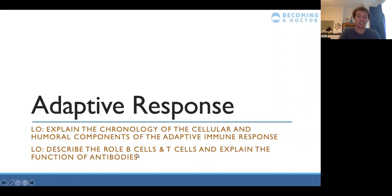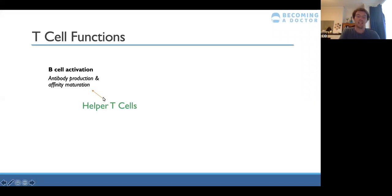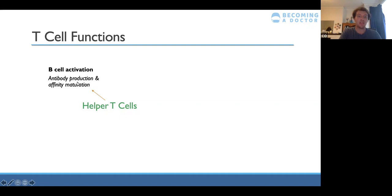Now we're looking at the adaptive response — in particular B cells, T cells, and antibodies. There are two main types of T cells: helper T cells and killer T cells. For helper T cells, one key function is B cell activation. Antigen presenting cells release cytokines to activate T cells, and those T cells then activate B cells. B cells produce antibodies, and T cells cause B cells to undergo affinity maturation — the process of going from a naive cell to an activated cell.